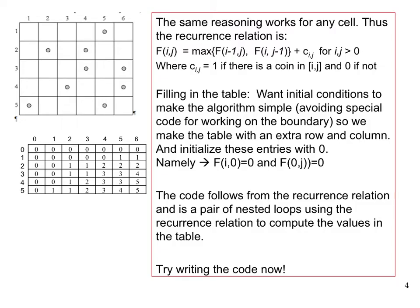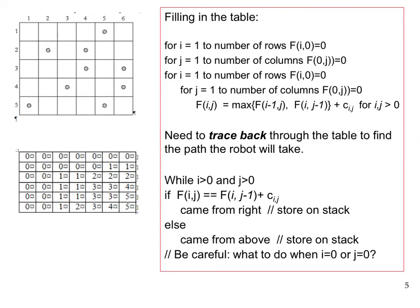Try filling in the rest of the table and think about what the nested loops need to look like. As you've probably figured out, we initialize the 0th column and the 0th row with 0s, then loop over the rows, then loop over the columns in a nested loop, and apply our recurrence relation. That's all there is to it. This accesses some array that contains which cells have coins, and it fills in the table.